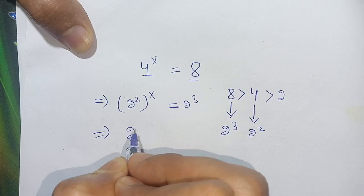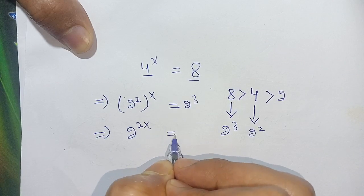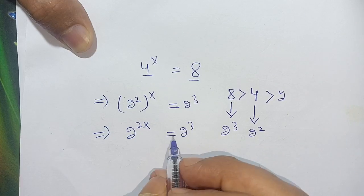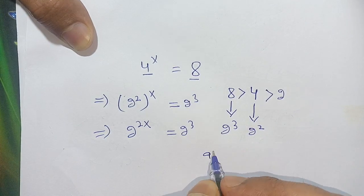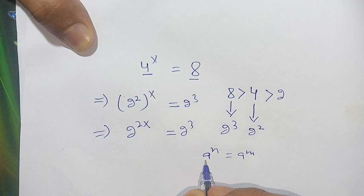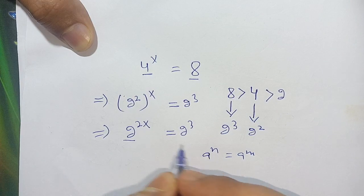Now it is in the form of a^n = a^m. Here a is 2, n is 2x, and m is 3.